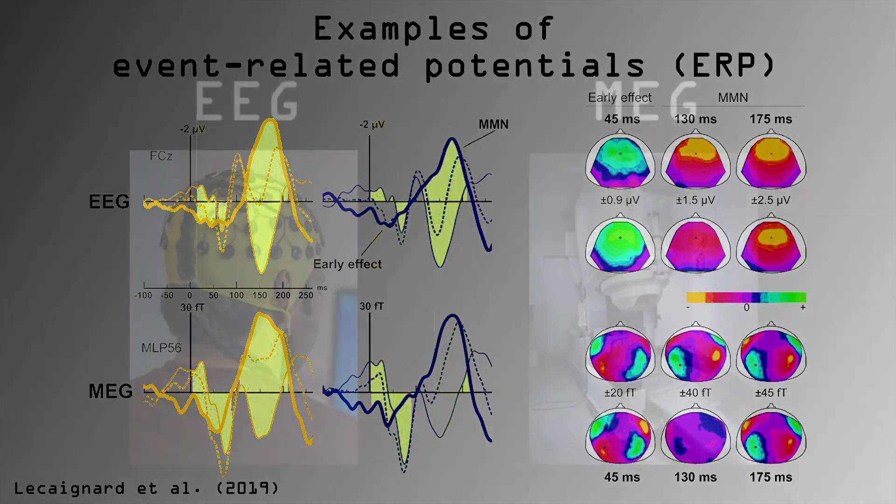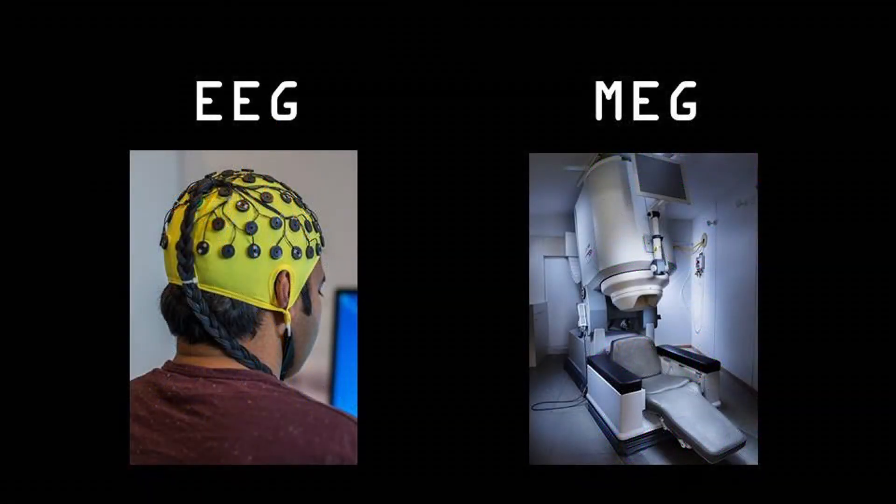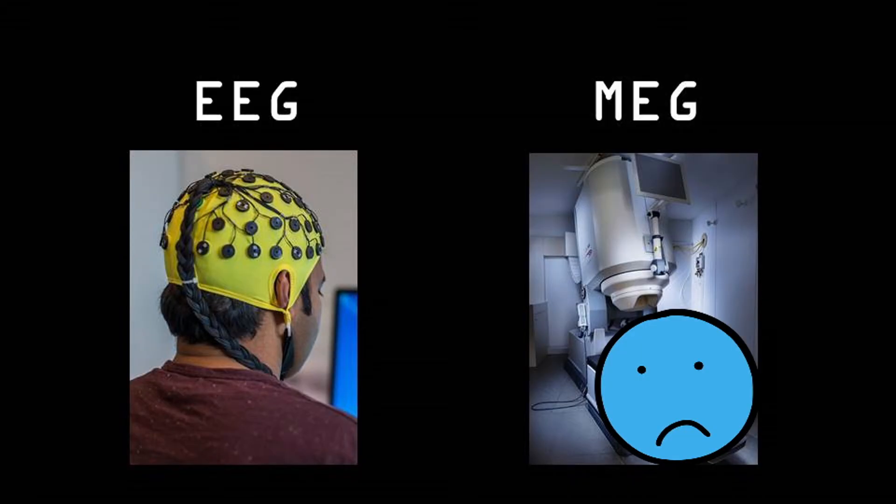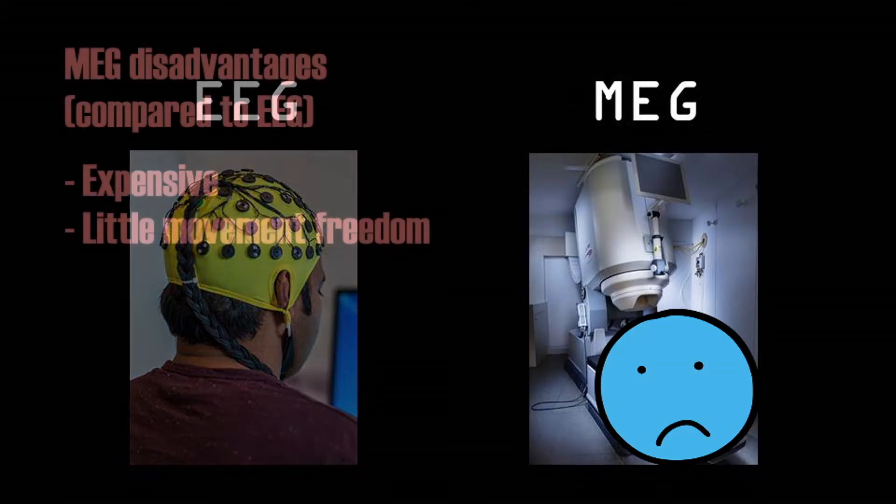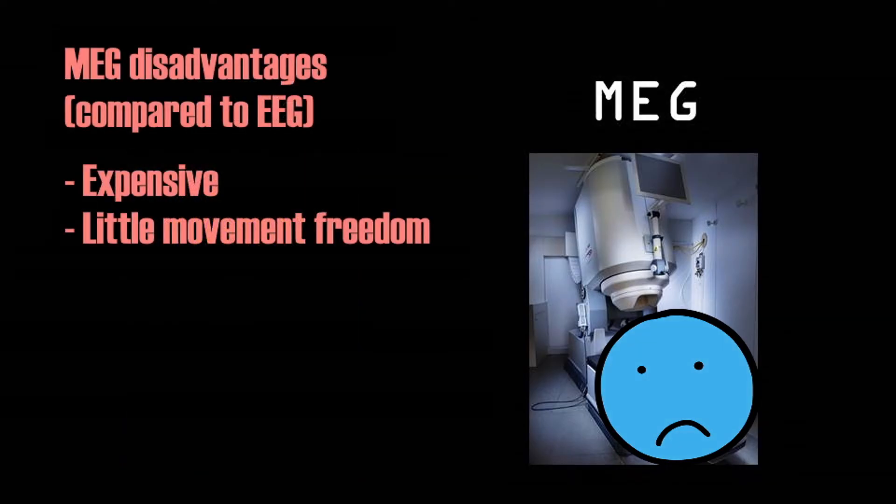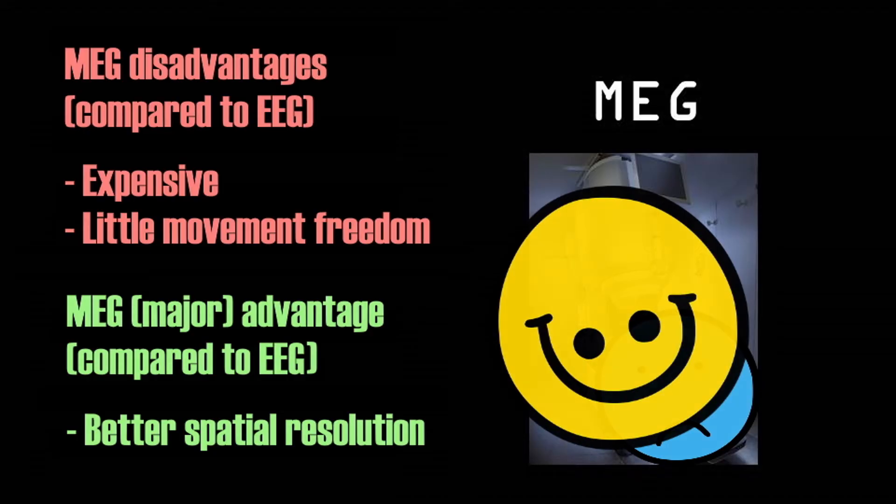So if EEG and MEG pick up similar signals, why choose for MEG? Because on the first glance, MEG doesn't look like a great choice, since it is more expensive, and it requires participants to sit perfectly still, allowing for even less movement freedom than with EEG. However, MEG does have one major advantage.